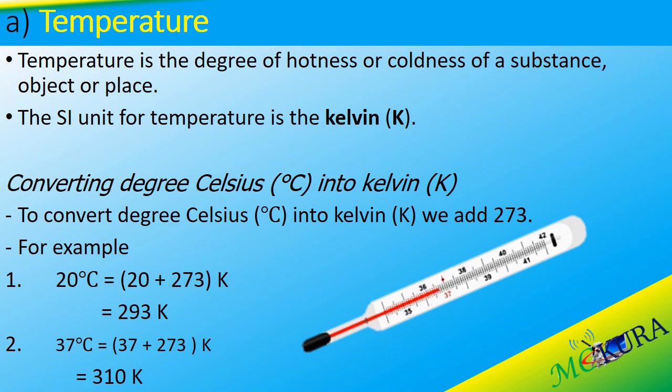How can we convert degrees Celsius into Kelvin? To convert degrees Celsius into Kelvin, we add 273. For example, if we have 20 degrees Celsius, we add 273 to get 293 Kelvin. If we have 37 degrees Celsius, we add 37 plus 273, which gives us 310 Kelvin.